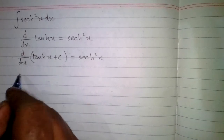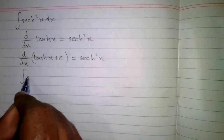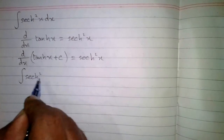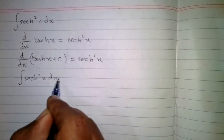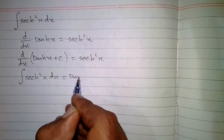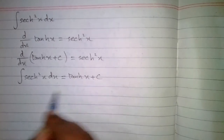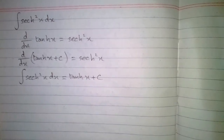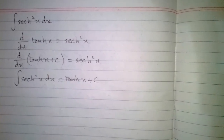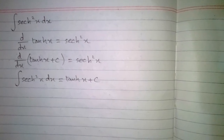So we can say that the integral of hyperbolic sec square X is hyperbolic tan X plus C, where C is the constant of integration. This is the integral of hyperbolic sec square X.